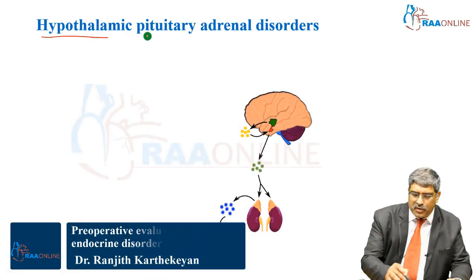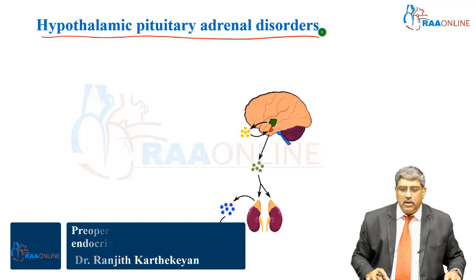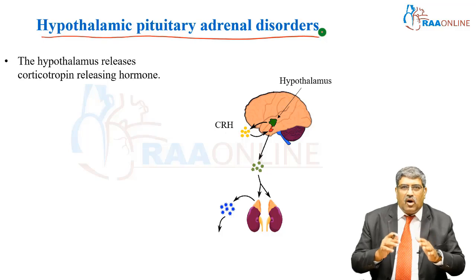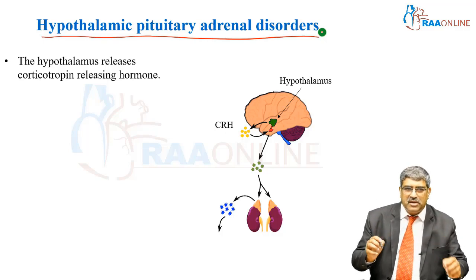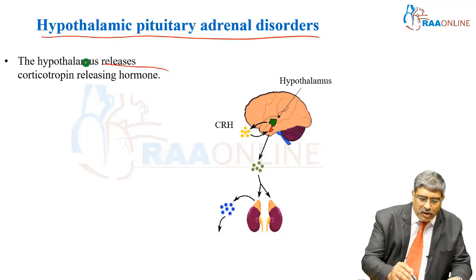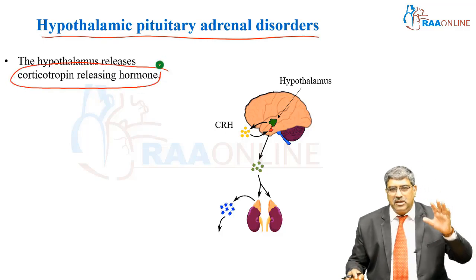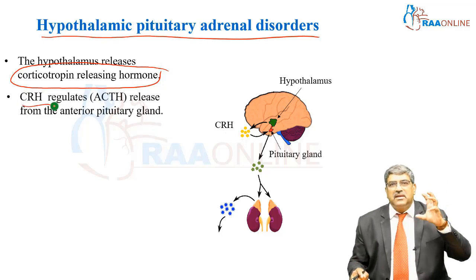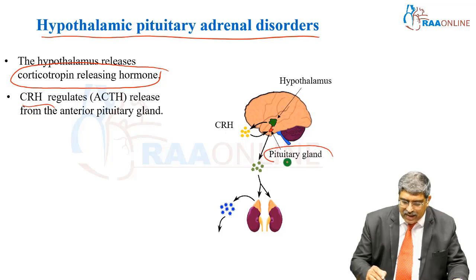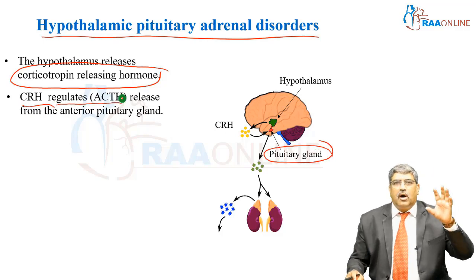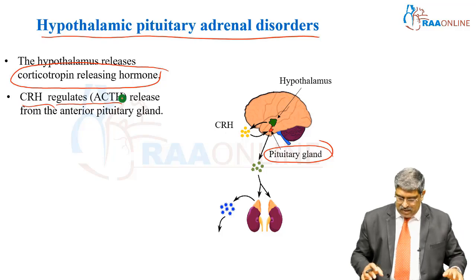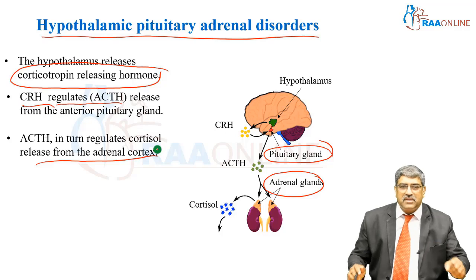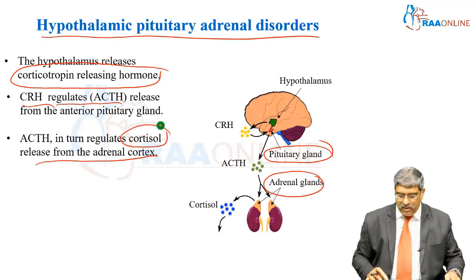Coming to hypothalamic pituitary adrenal disorder. The hypothalamus, in response to stress or as part of normal homeostasis, releases corticotropin releasing hormone (CRH). This CRH acts on the pituitary gland and releases adrenocorticotropic hormone (ACTH), which then acts on the adrenal cortex and releases cortisol.